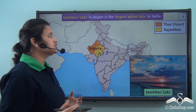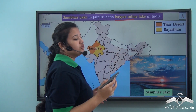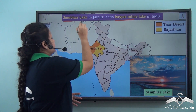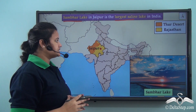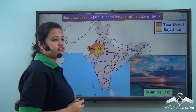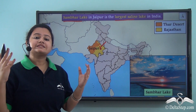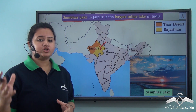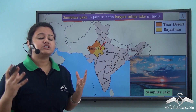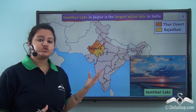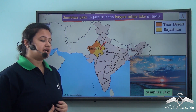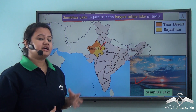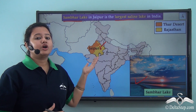The largest saline lake, or salt water lake, of India is Sambar Lake. This lake is present in Jaipur, Rajasthan. Being saline in nature, this lake has a high salt content, so a good amount of salt can be extracted from this region. Thus Sambar Lake is a good source of Rajasthan's salt production.